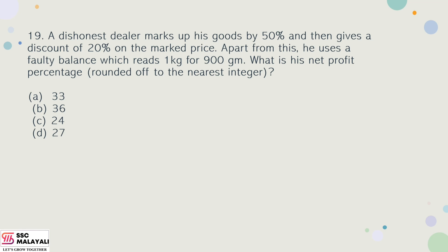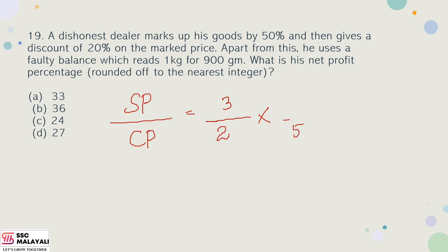Question 19: A dishonest dealer marks up his goods by 50% and then gives a discount of 20% on the marked price. Apart from this, he uses a faulty balance which reads 1 kg for 900 grams. What is his net profit percentage? For a 50% markup, the selling price ratio is 3 by 2. With a 20% discount, the effective price becomes 4 units.